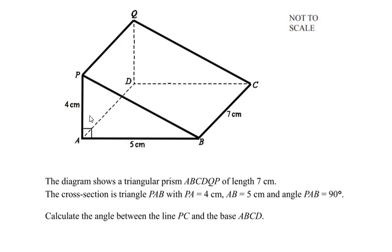The diagram shows a triangular prism ABCDPQ of length 7 centimeters. The cross section is triangle PAB with PA = 4 cm, AB = 5 cm, and angle PAB = 90 degrees. Calculate the angle between the line PC and the base ABCD.